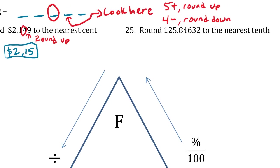Example 25: round 125.84632 to the nearest tenth. Nearest tenth means we're rounding the eight, and we look at the four. Four is less than five, so we round down — ignore all the decimals after the eight, keep the eight as is, and we get 125.8.